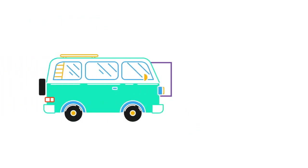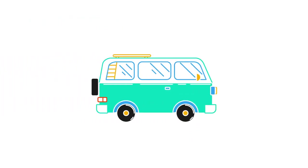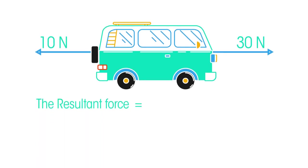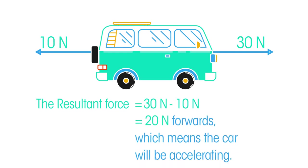For example, look at this car. There is a force of 10 newtons pushing it backwards and a force of 30 newtons driving it forwards. To work out the resultant force, we subtract the smaller force from the larger force. So the resultant force equals 30 newtons minus 10 newtons, which is 20 newtons forwards, which means the car will be accelerating.